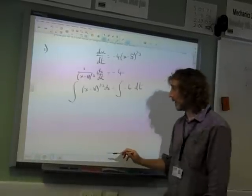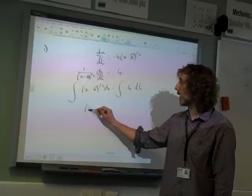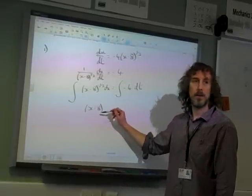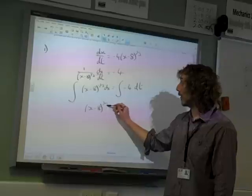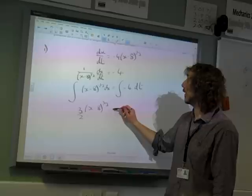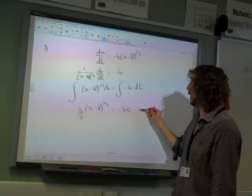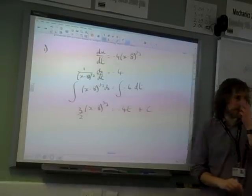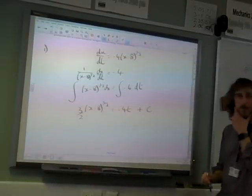Add 1 to the power, divide by the new power. So that goes (x minus 8) to the two-thirds, divided by 2 thirds, so times 3 over 2, is minus 4t, don't forget, plus c. Are we happy with that so far?